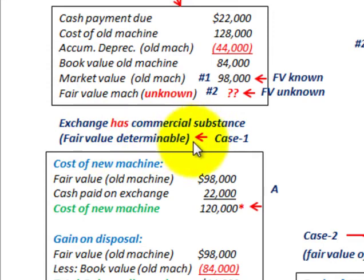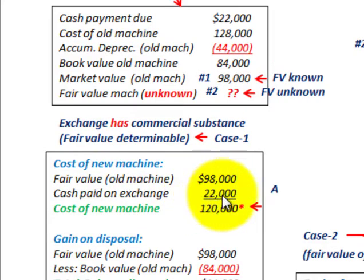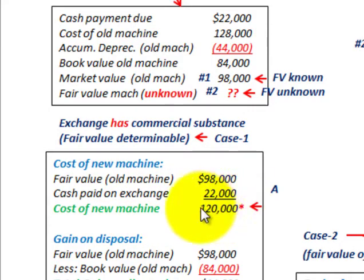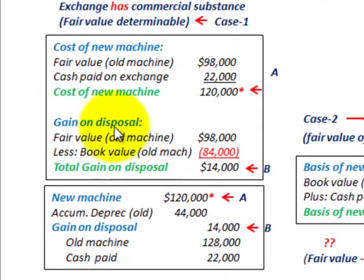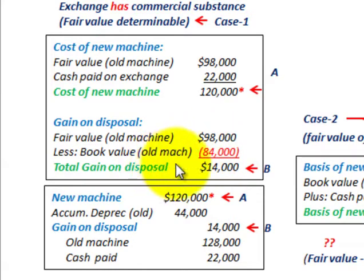For case one — the exchange has commercial substance and fair value is determinable — we first determine the cost of the new machine: that's the fair value of the old machine ($98,000) plus the cash paid ($22,000), giving us a cost of $120,000 for the new machine. Next, to determine our gain, we take the fair value of the old machine ($98,000) less its book value ($84,000), giving us a total gain on disposal of fourteen thousand dollars.